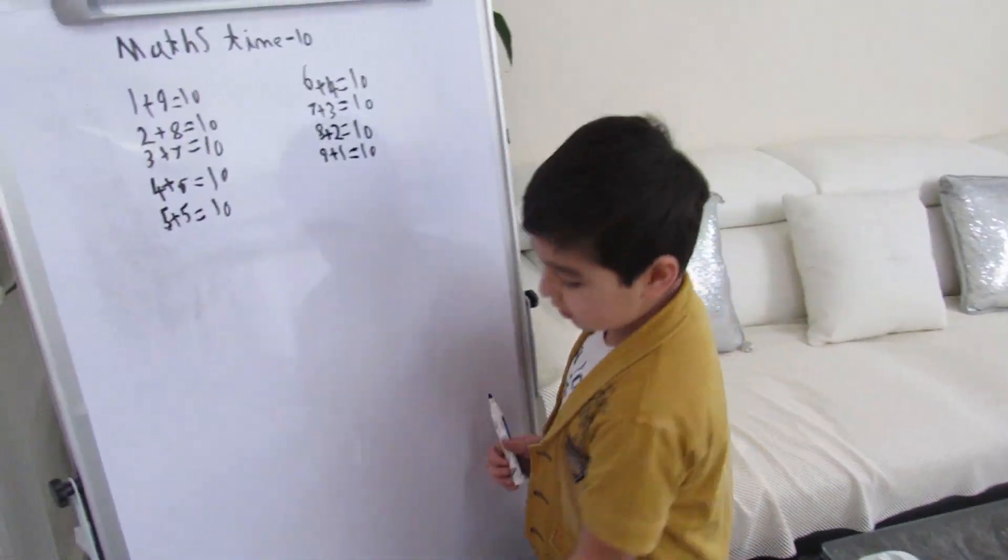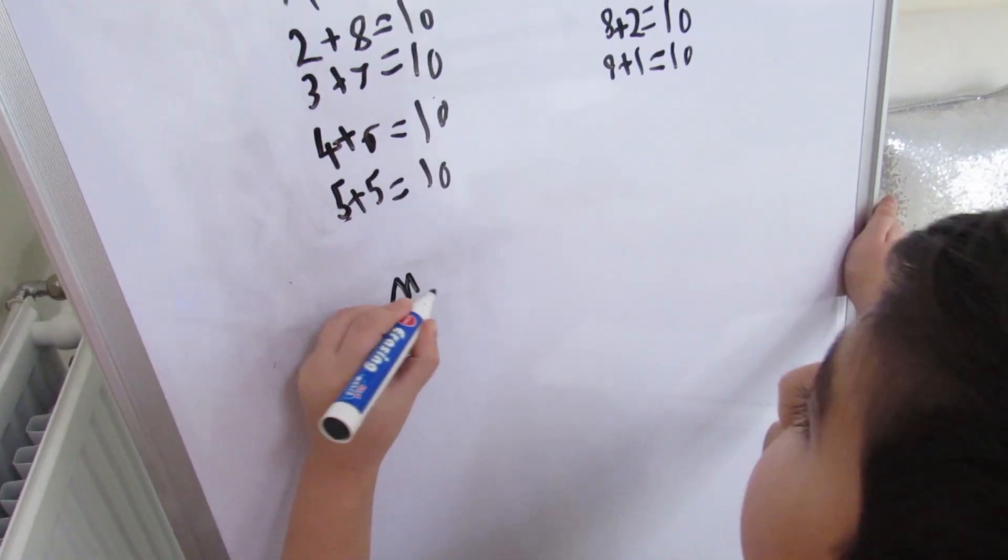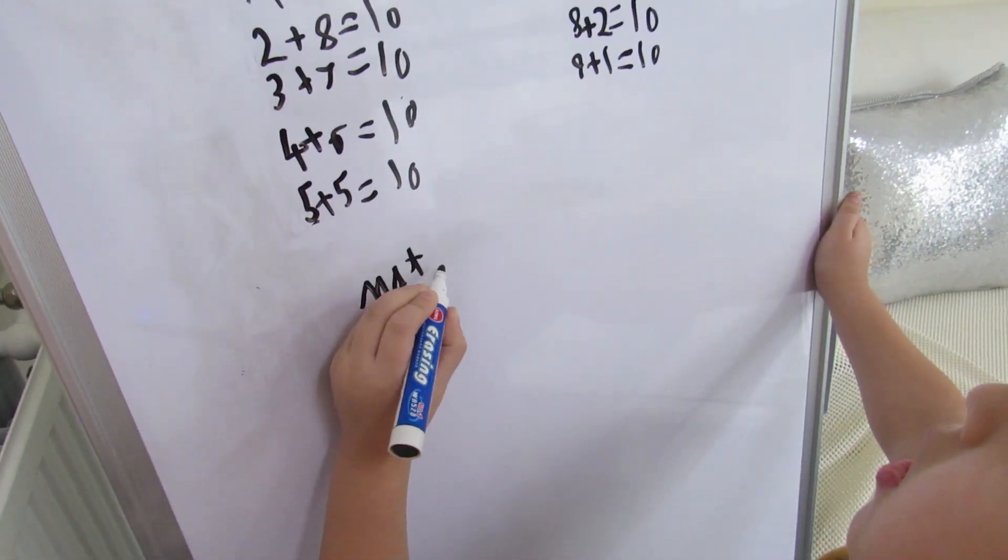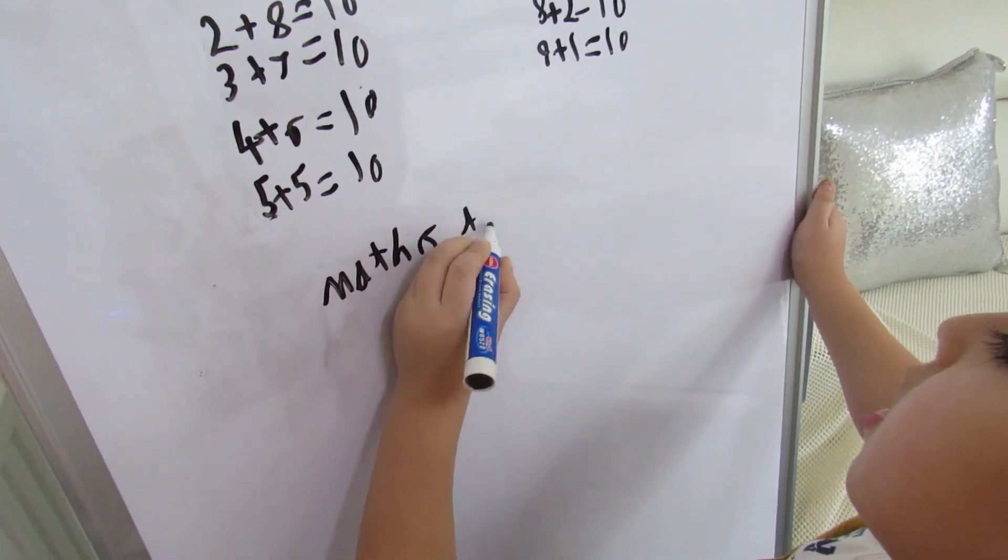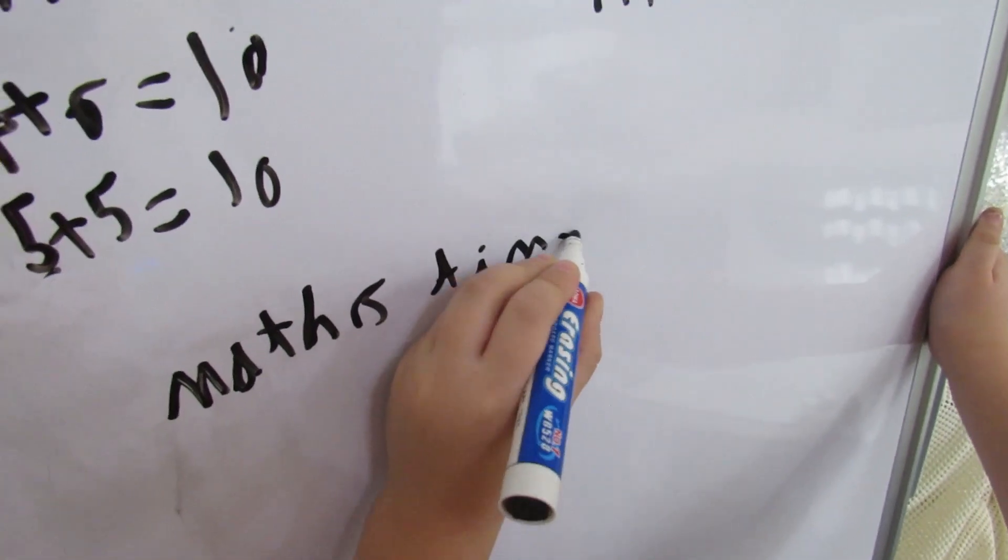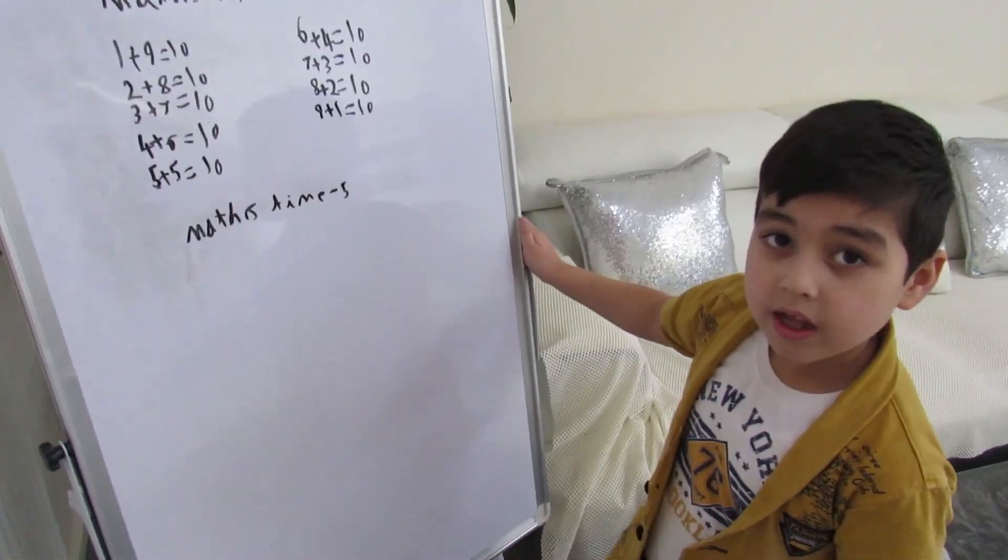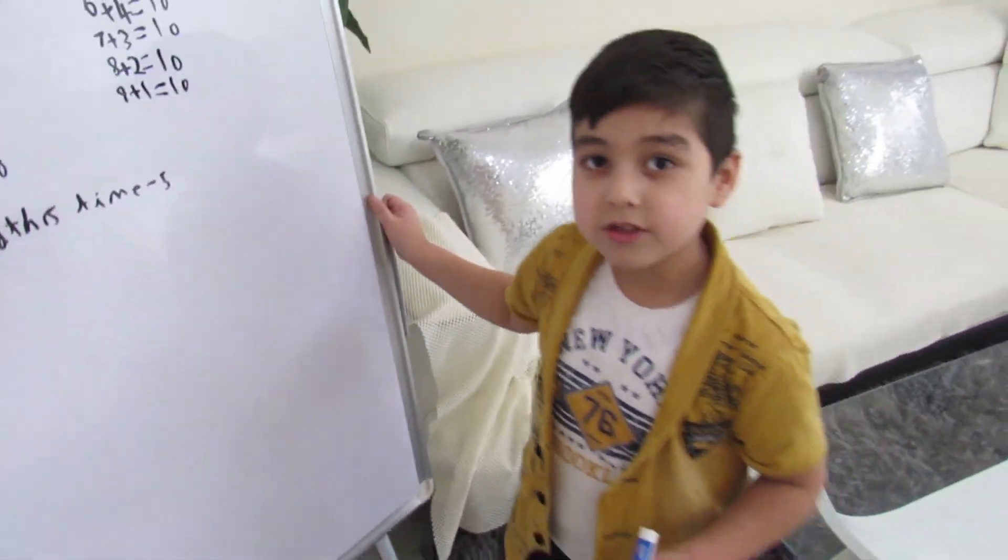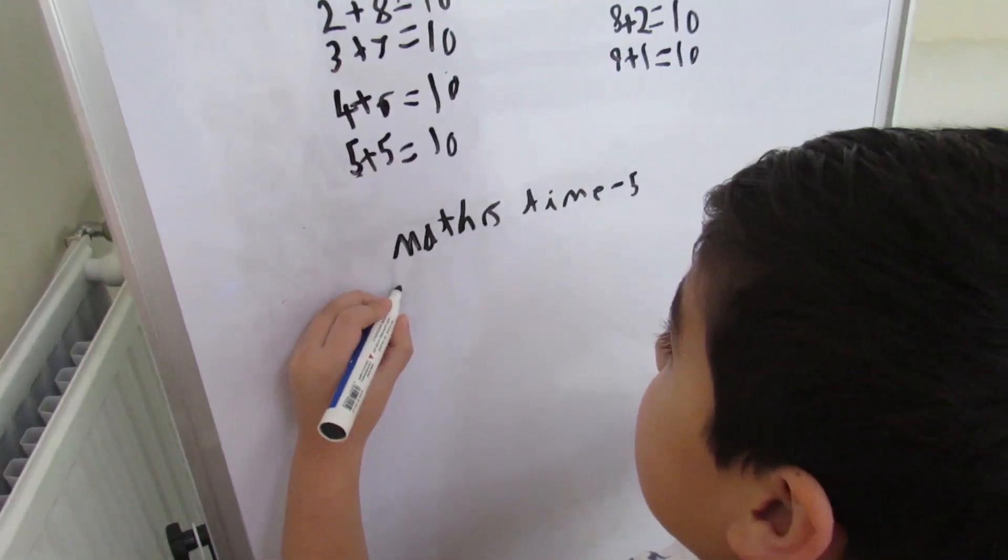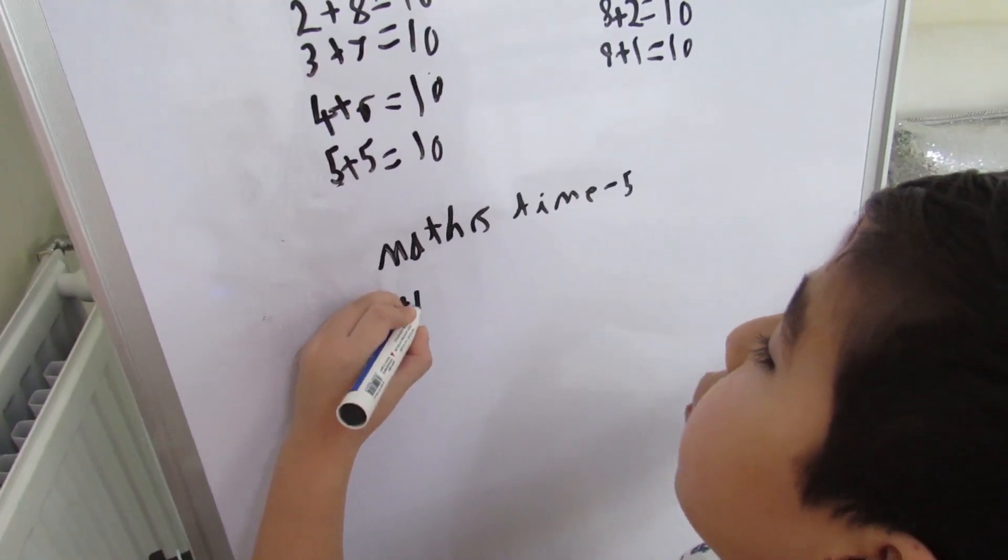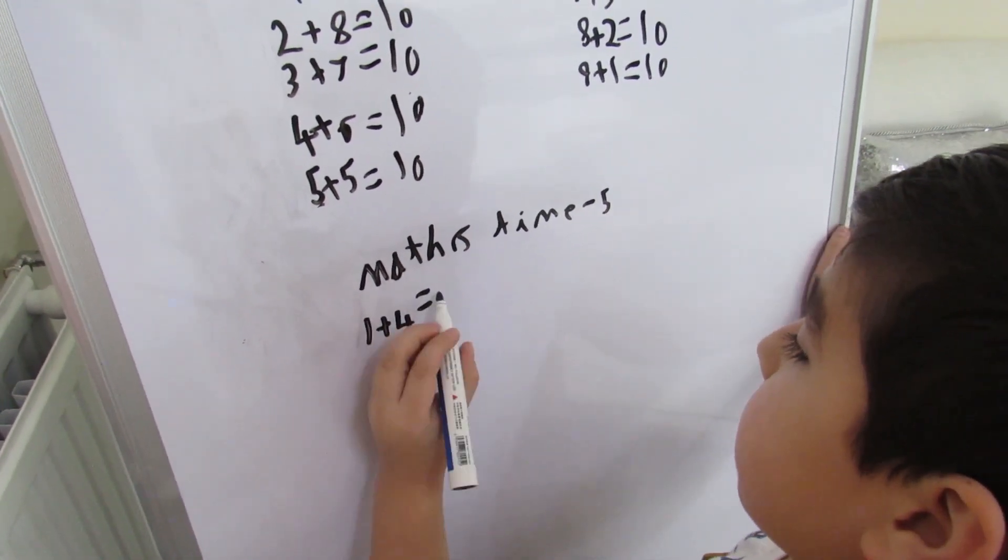Now we're going to do number bonds up to five. There are only five ways to do number bonds up to five. So the first one is one plus four equals five.